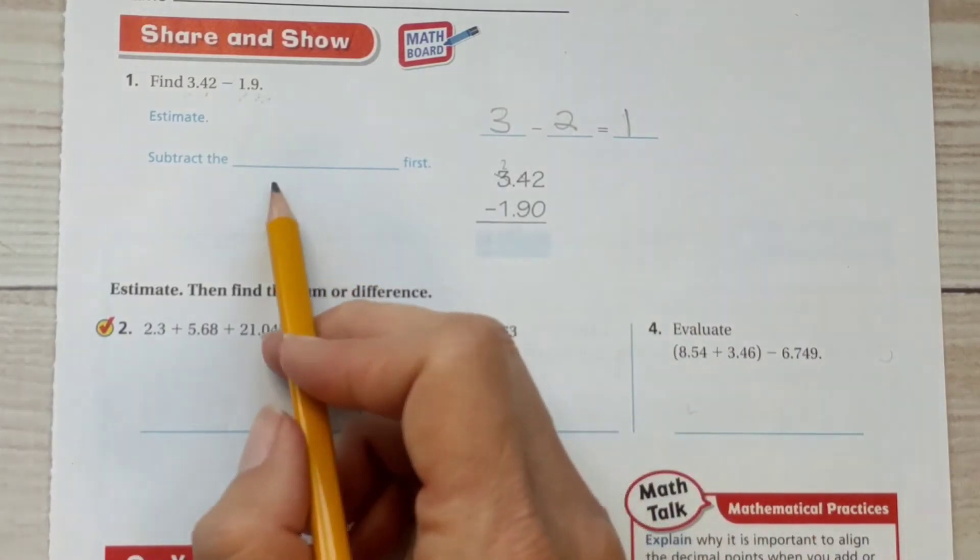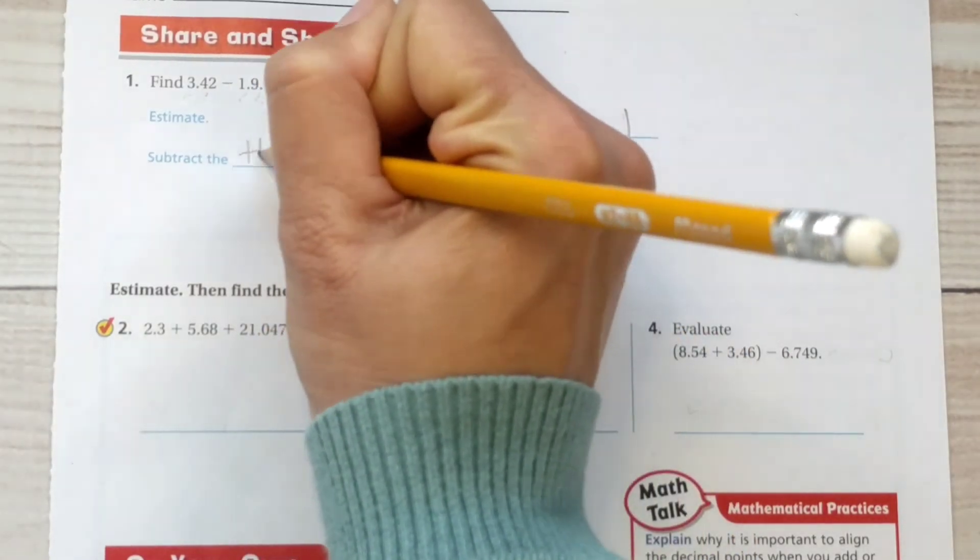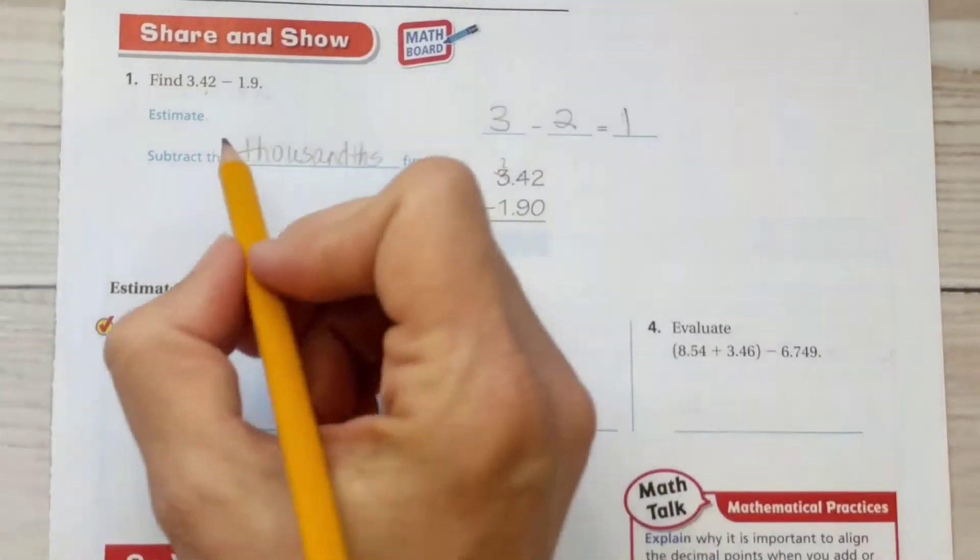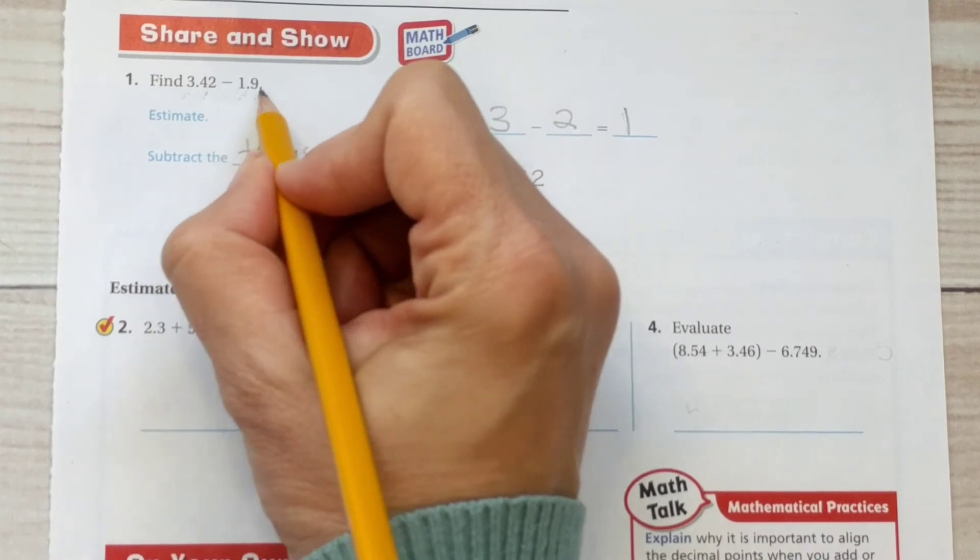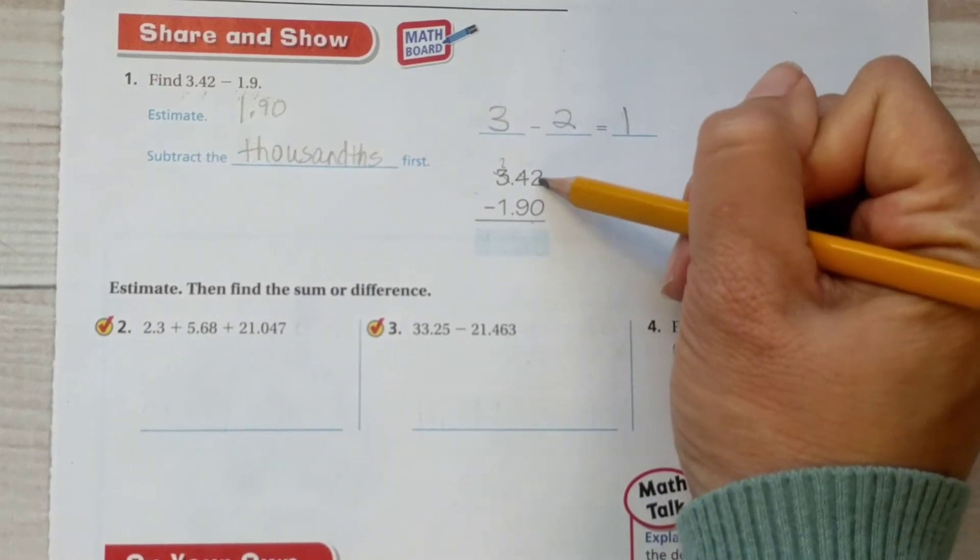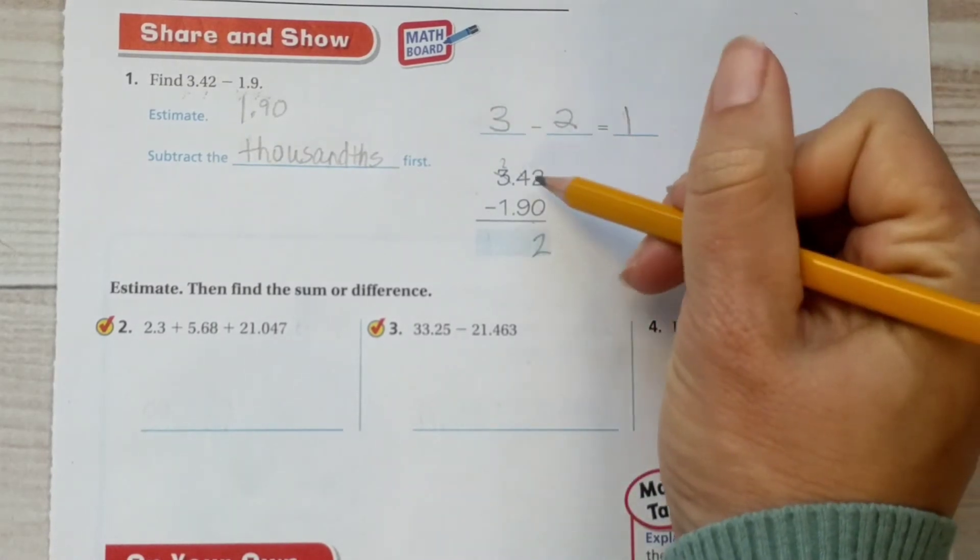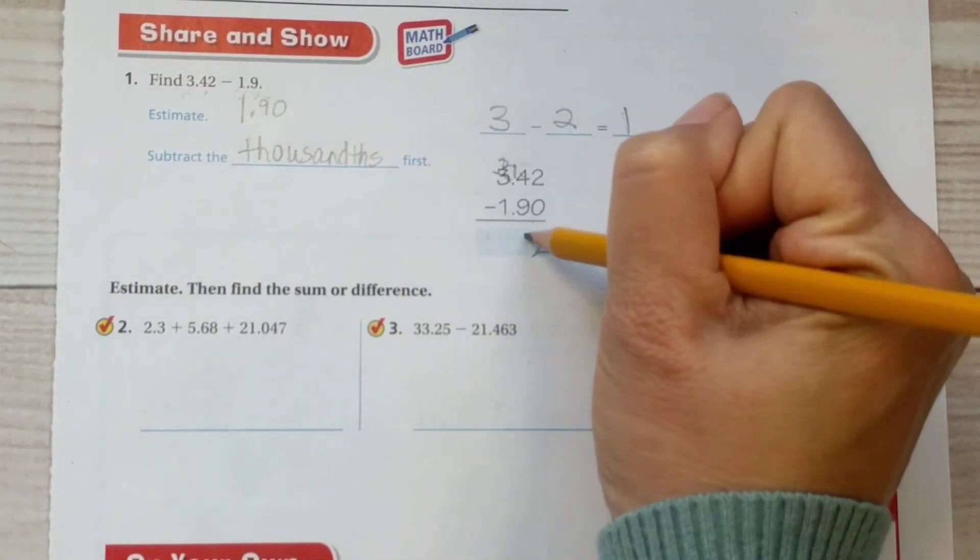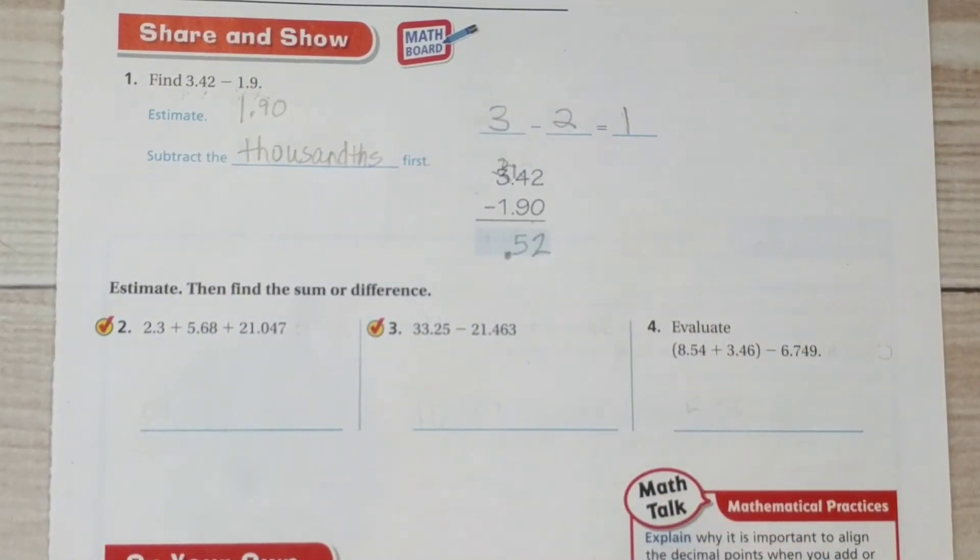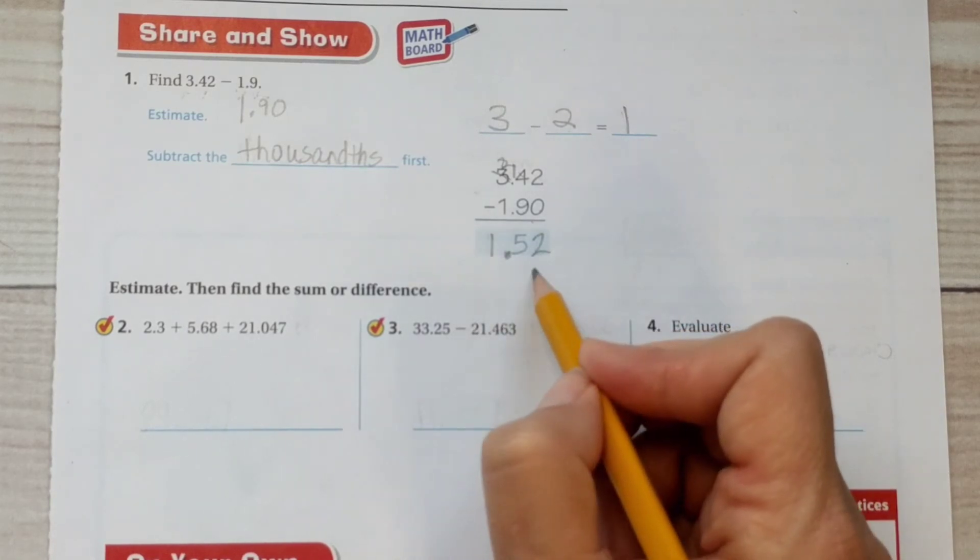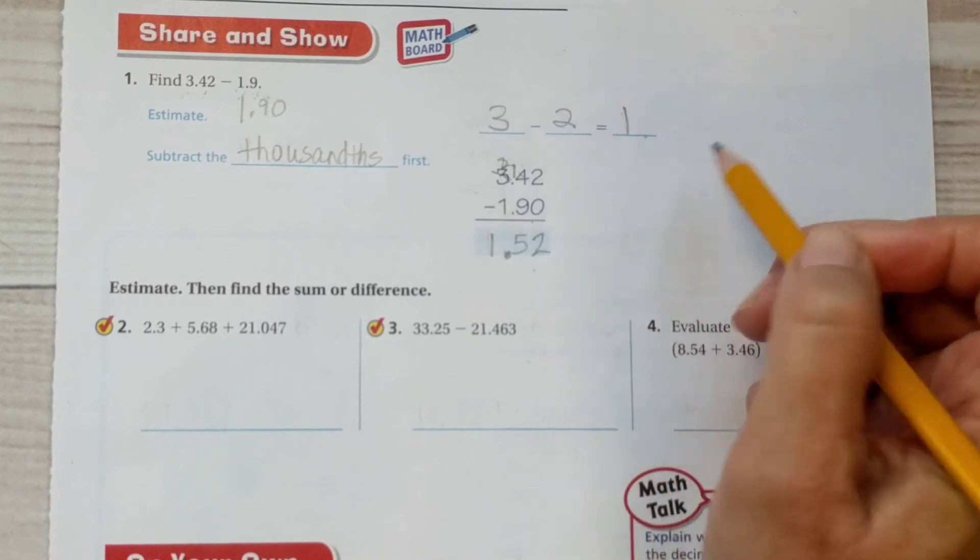Here we're going to subtract the thousandths first. Notice once again, they added a 0 because 1.9 is exactly the same as 1.90. There's no difference in that value. So we have 2 take away 0 is 2. 4 take away 9 cannot be done. So we're going to regroup this and make it 14. 14 take away 9 is 5. Bring down the decimal. 2 take away 1 is 1. So our final answer is 1.52. Is that pretty close to 1? Yes, it is. So our answer is reasonable.